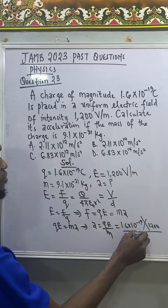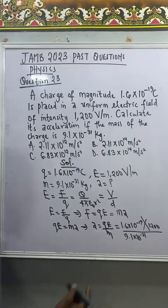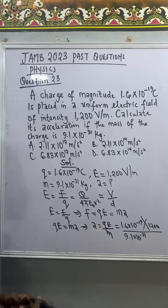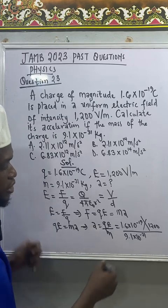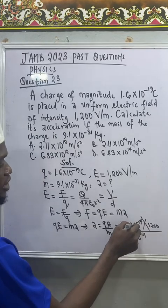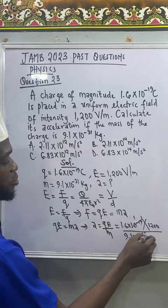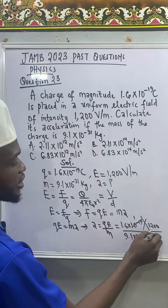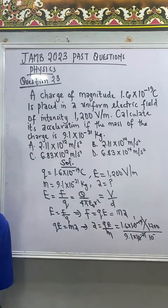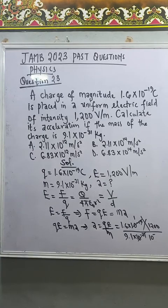Now from here certain things can cut. 10 raised to power minus 19 here, one there is to power minus 19 here, that will be 10 raised to power 31 minus 19. 31 minus 19 give me 12, that's 10 raised to power minus 12.